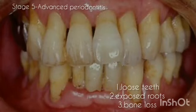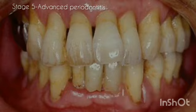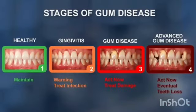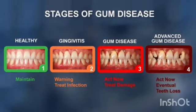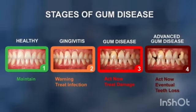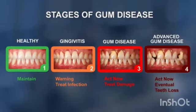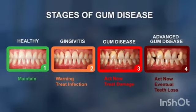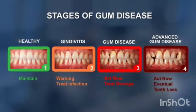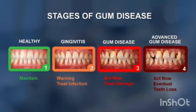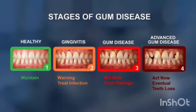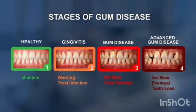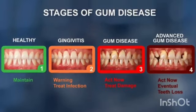Advanced gum disease also shows exposed root surfaces and receding gums. Summing up, the four stages are: healthy, gingivitis, gum disease, and advanced gum disease. Healthy gingiva is maintained by proper oral hygiene, and in gingivitis, scaling can be done. In gum disease, scaling and root planing is very helpful.